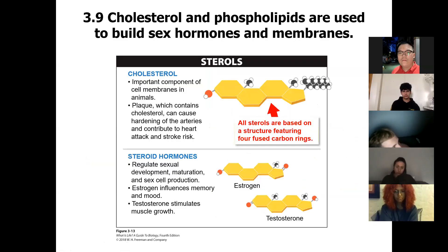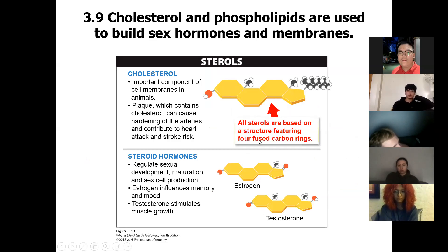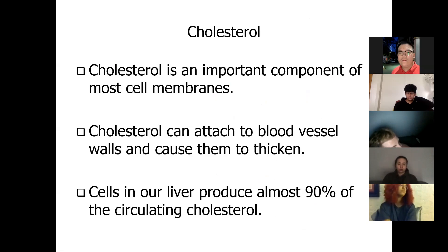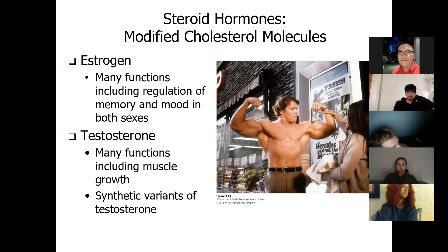Cholesterol is an important molecule found in cell membranes. Excessive cholesterol is associated with cardiovascular diseases — it accumulates on blood vessel walls, causes inflammation, and increases the risk of heart attack and stroke. But at the same time, many hormones are made from cholesterol, including sex hormones like estrogen and testosterone, and thyroid hormones. So cholesterol is not an enemy — it's actually a very important molecule.